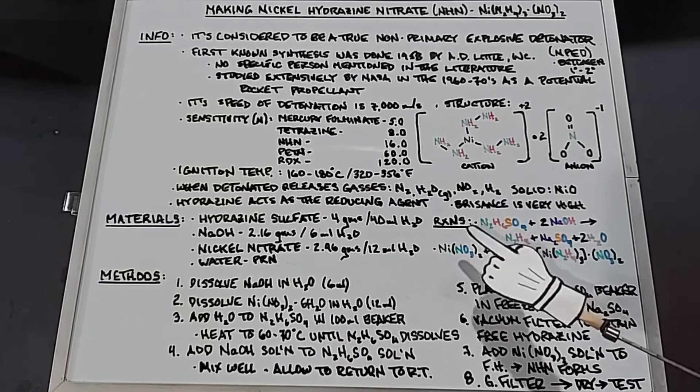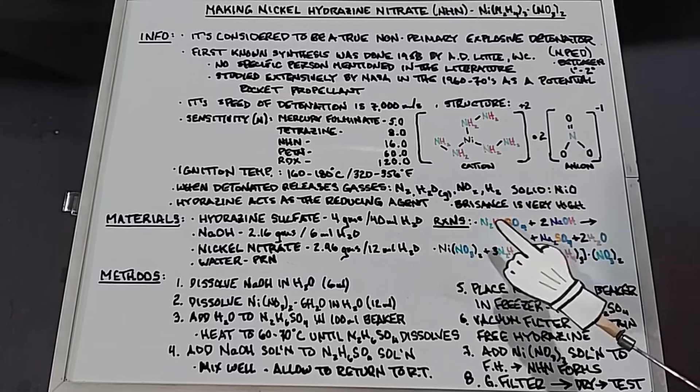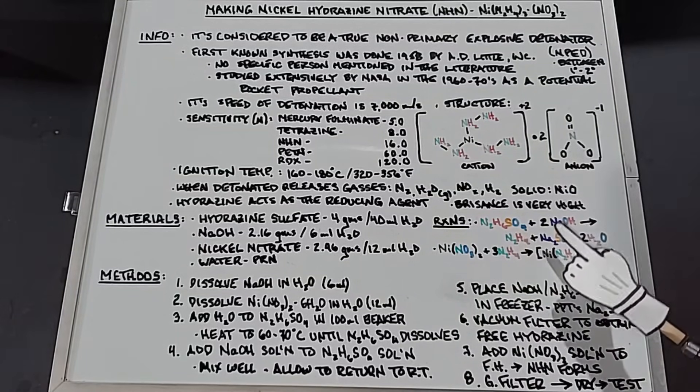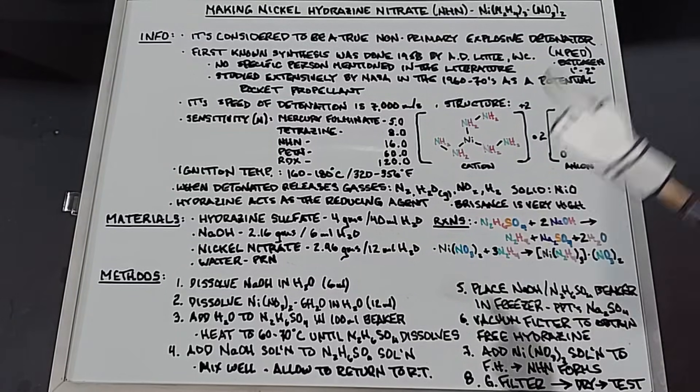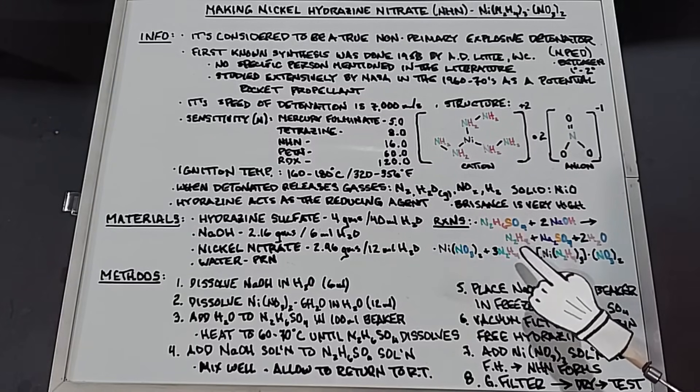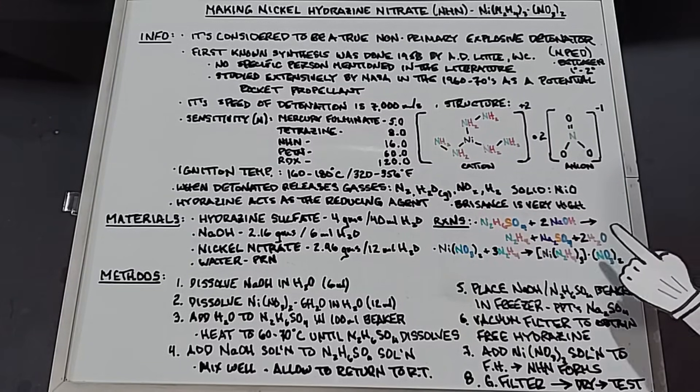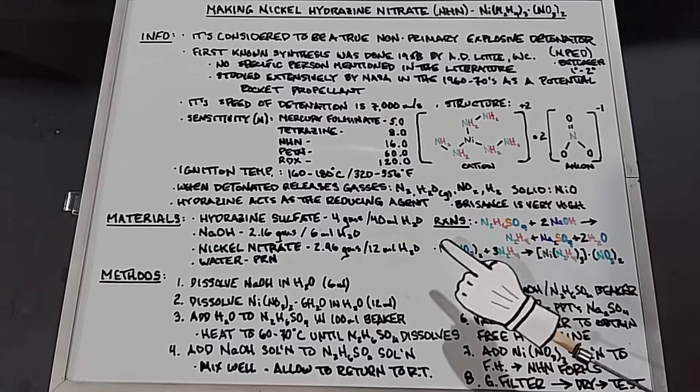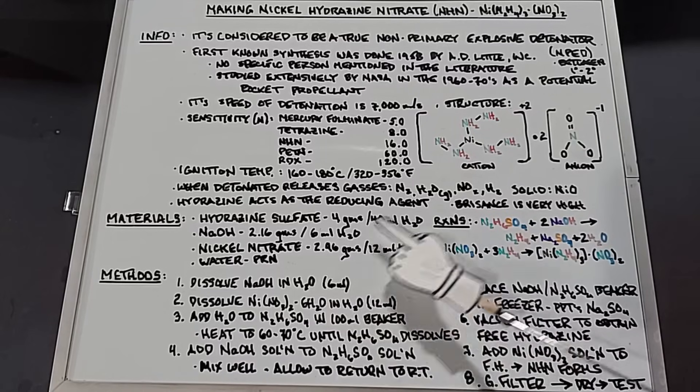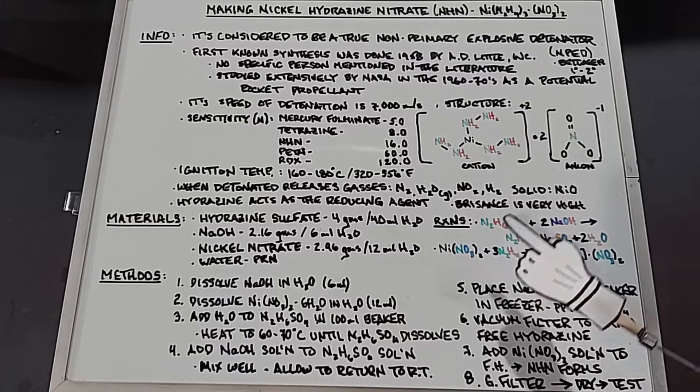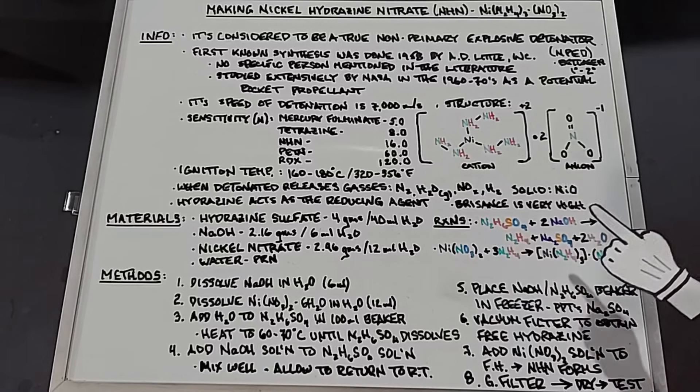The reactions: there's only a couple that are really important. We have our hydrazine sulfate, N2H6SO4, and we're going to mix it with some sodium hydroxide, 2 NaOH, which will yield free hydrazine. That's the most important thing we're looking for here. It will also yield sodium sulfate and a couple of waters. And then in the last step of the experiment, we're going to take our nickel nitrate, which of course is dissolved in water, and mix it with the free hydrazine we just made up here, and we'll end up with nickel hydrazine nitrate, our end product.